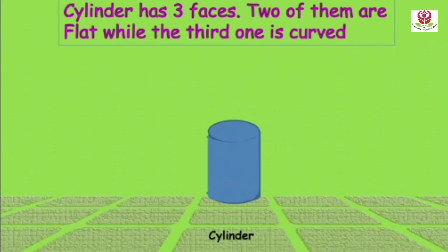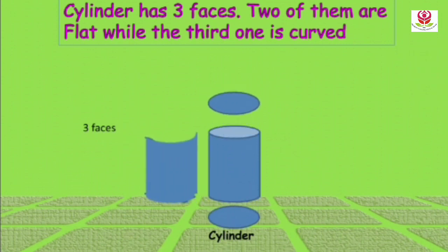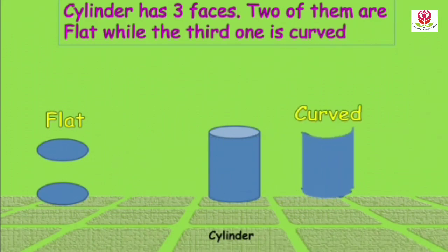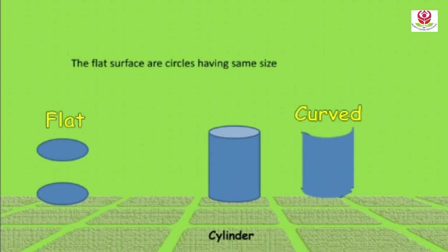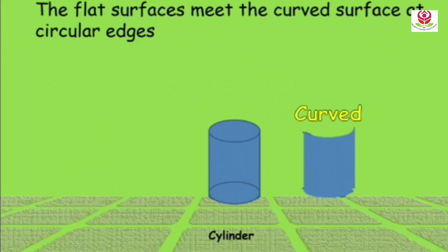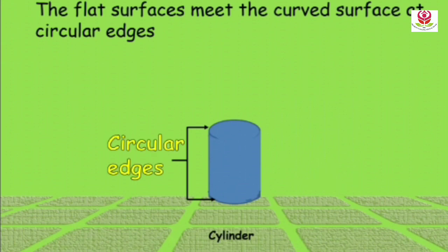Cylinder has 3 faces. The third one is curved. The flat surfaces are circles of the same size. The flat surfaces meet the curved surface at circular edges. So the flat surface meets the curved surface at circular edges.